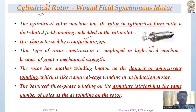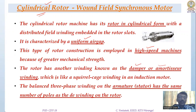The rotor may also have another winding called the damper or amortisseur winding, which is like a squirrel cage winding. The balanced three-phase winding on the stator armature has the same number of poles as the DC winding of the rotor.